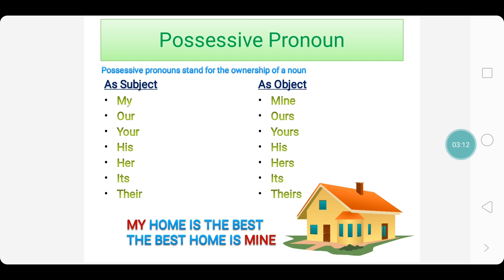When used as an object, it is used as: mine, ours, yours, his, hers, its, theirs. You are always instructed not to put an apostrophe for yours, as in yours faithfully, because yours is a possessive pronoun. For example, my home is the best — here, my is used in the place of subject. When my goes to the object place, it changes to mine: the best home is mine.